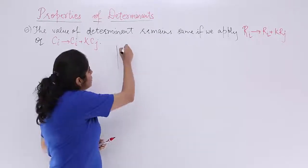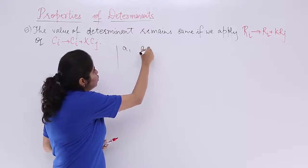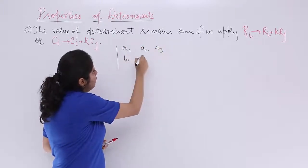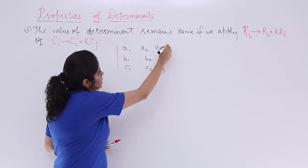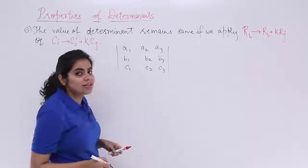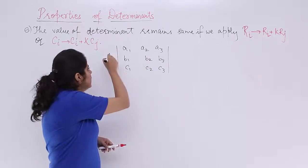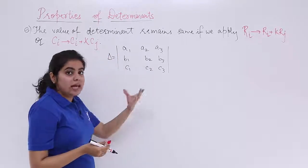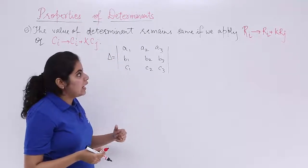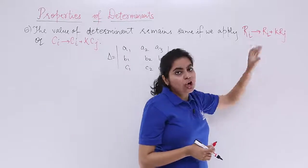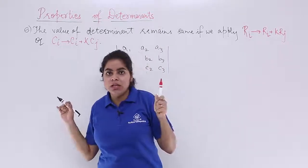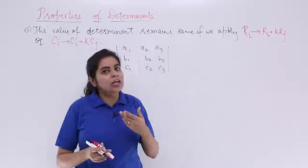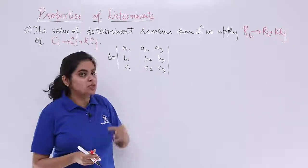I have a determinant and it is a1, a2, a3, b1, b2, b3, c1, c2, c3 that I'm taking into consideration and let me name this as del. Now, if del is this determinant and I apply any operation on the row or column in this manner, not changing the definition, the value should remain same. That is what we need to see.